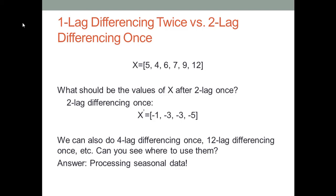2-lag differencing means we subtract the data value 2 days back from the current value. In the original dataset, to do 2-lag differencing once, we subtract 6 from 5, then subtract 7 from 4, then subtract 9 from 6, then subtract 12 from 7. We continue until we run out of values to subtract. Eventually we get the results of 2-lag differencing once, called x-prime, as shown on this slide.